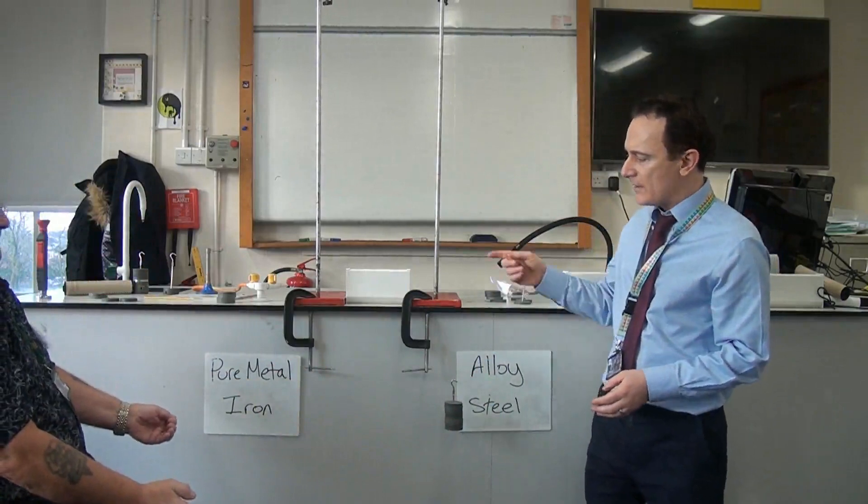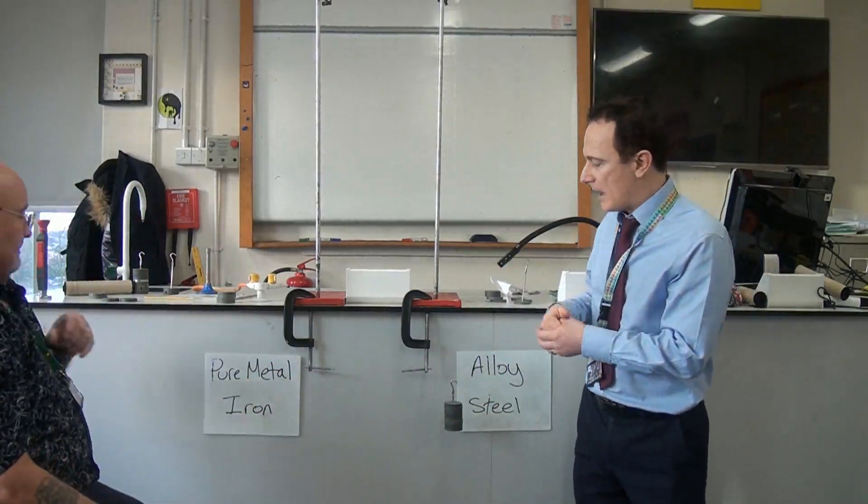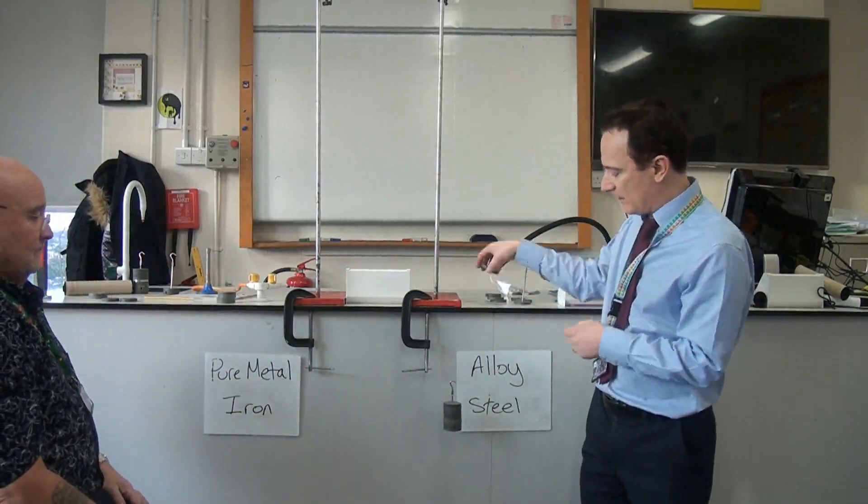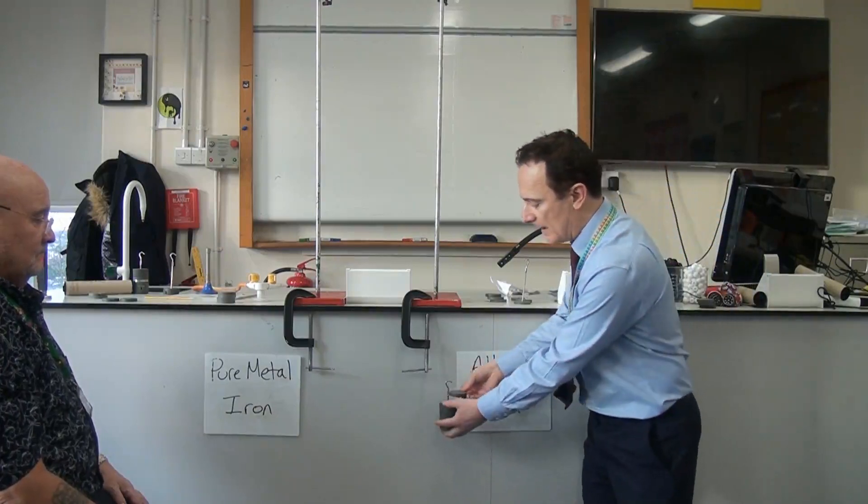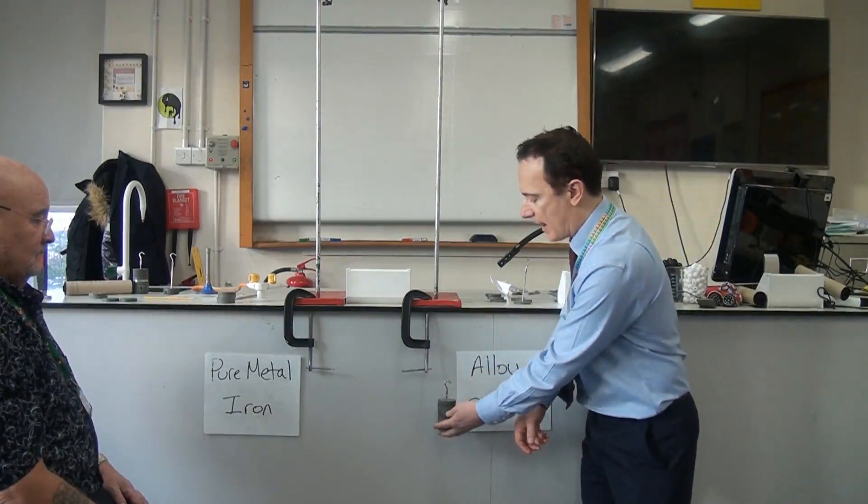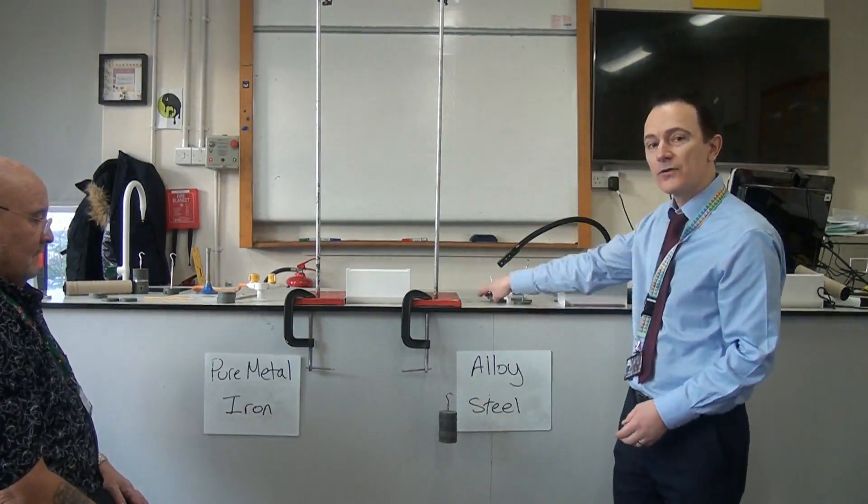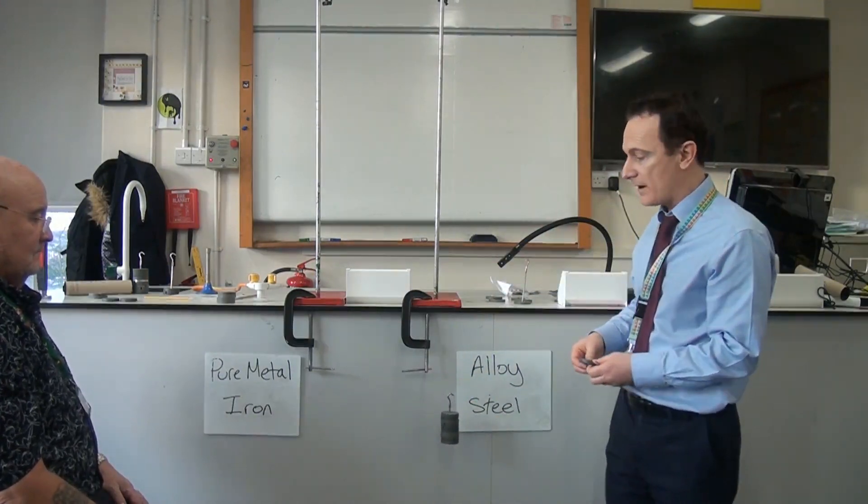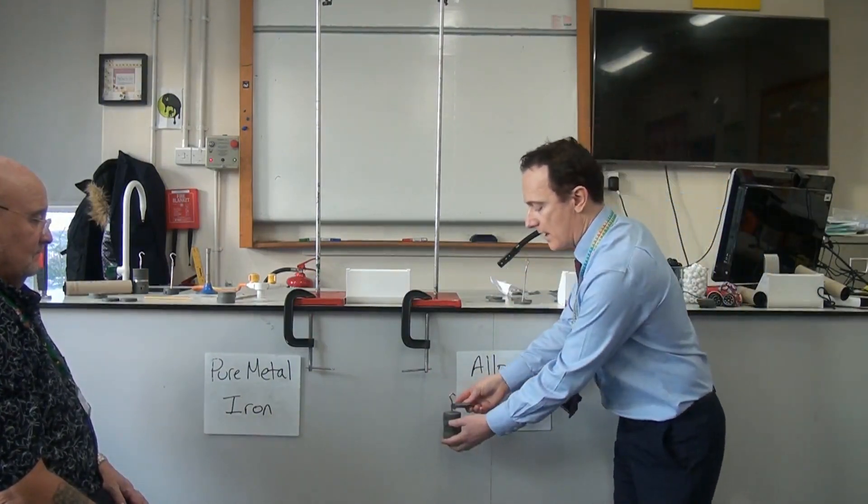We can see that the pure metal is broken, the iron is broken, the steel is still holding with 900 grams. So let's see how much stronger the alloy is. That's now got 1000 grams on it and it's still not broken.